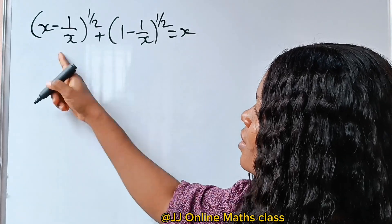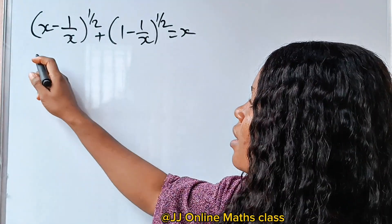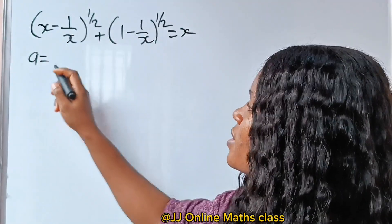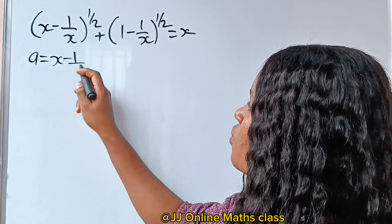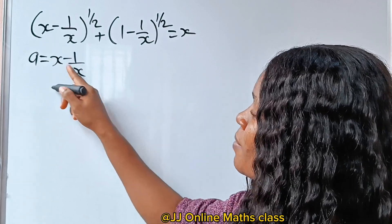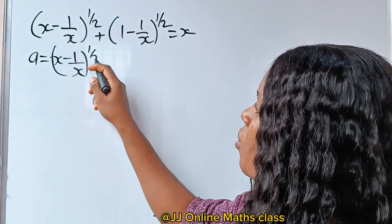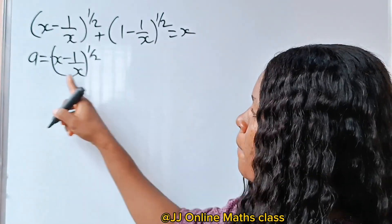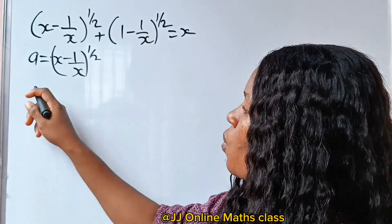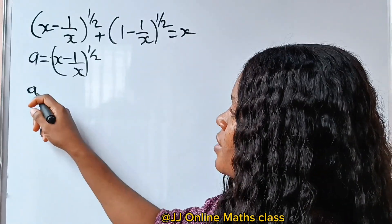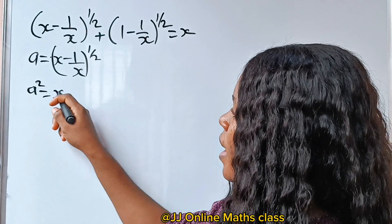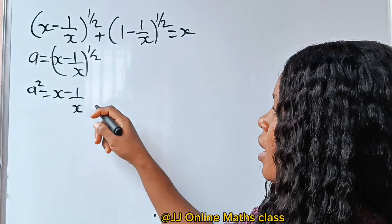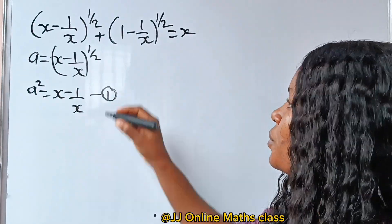Let's simplify this by saying that a equals this first term, which is x over 1 — that is, x minus 1 over x raised to the power of half. Now if we square both sides of this equation, we will have that a squared is equal to x minus 1 over x. Let's call this equation 1.